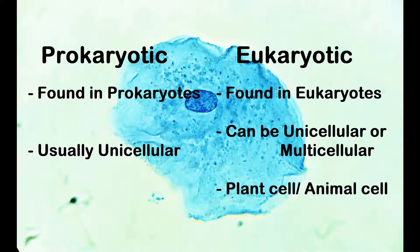Unicellular prokaryotes include certain algae, protozoans and fungi. Multicellular eukaryotes include many living organisms including both plants and animals.